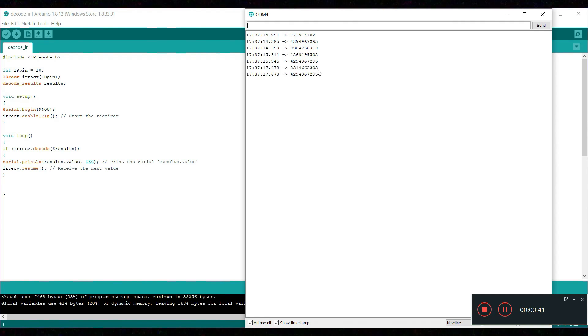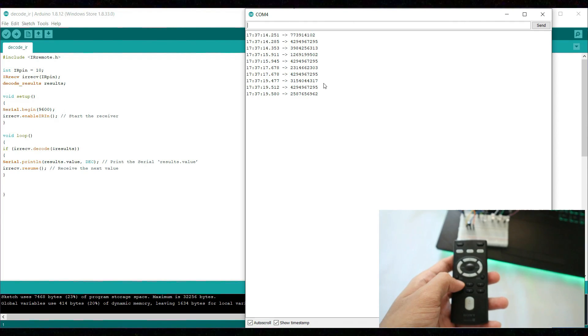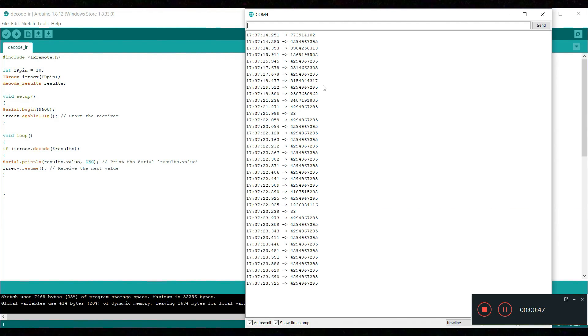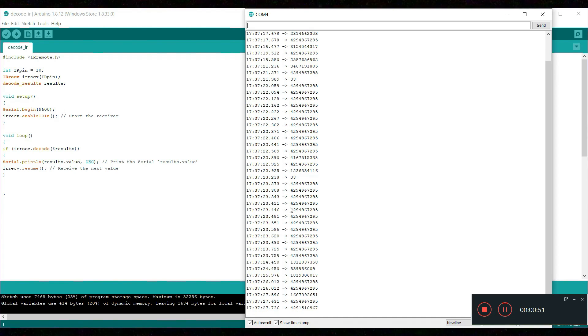Now these are just interference with the air. Now press 1 on your remote and you can see the first thing you see is 33. Now you don't need these, just the first numbers.